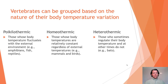Vertebrates can be grouped based on the nature of their body temperature variation using three terms: poikilothermic, homeothermic, and heterothermic. Poikilothermic organisms are those whose body temperature fluctuates with the external environment — think amphibians, fish, and reptiles. Homeothermic vertebrates maintain relatively constant body temperatures regardless of external temperatures — typically birds and mammals. Heterothermic organisms sometimes regulate their body temperature and other times do not.